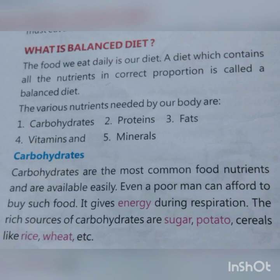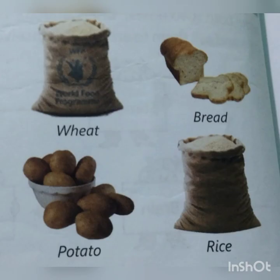First we discuss carbohydrates. Carbohydrates are the most common food nutrients and are available easily. Carbohydrates most common food nutrients हैं जो easily available हो जाते हैं। एक गरीब भी इसको easily afford कर पाता है। Prespiration के समय इससे energy प्राप्त होती है। Carbohydrates के resources हैं sugar, potato, cereals जैसे rice, wheat, etc.